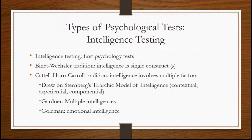This newer way of thinking about intelligence draws on the work of psychologists Cattell, Horn, and Carroll, whose tradition says that intelligence involves multiple factors and dimensions. They drew on Sternberg's triarchic model of intelligence, which identifies contextual, experiential, and componential intelligence. It also draws on Gardner's idea of multiple intelligences — that we can be intelligent in different ways and in different areas. A newer idea that branches beyond what we typically think about is Goleman's concept of emotional intelligence, saying that some people know how to relate to others and some don't. Somebody might be very intelligent intellectually but not have very good emotional intelligence.